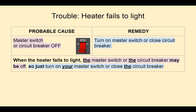For example, when the heater fails to light, the master switch or the circuit breaker may be off, so just turn on your master switch or close the circuit breaker. As you can see in this example, we've added the article 'the' before the nouns — master switch becomes 'the master switch', circuit breaker becomes 'the circuit breaker' — or we use the possessive pronoun 'your master switch'.